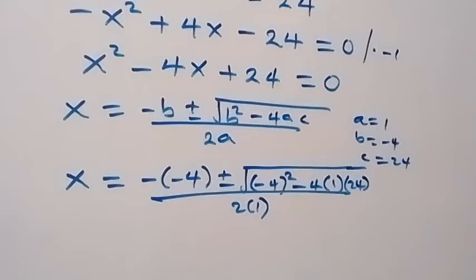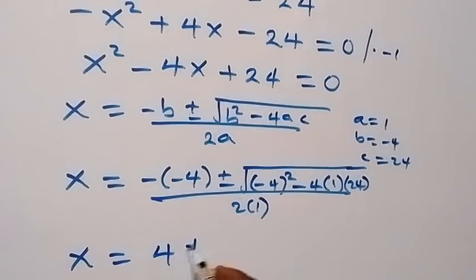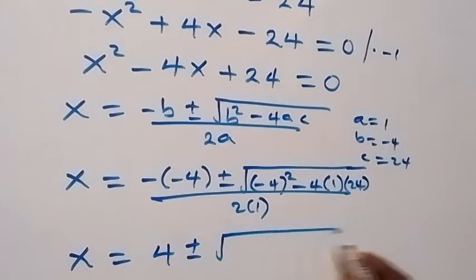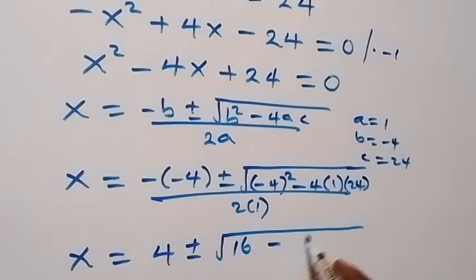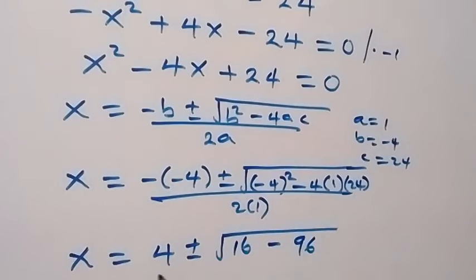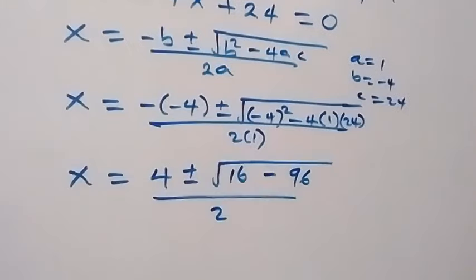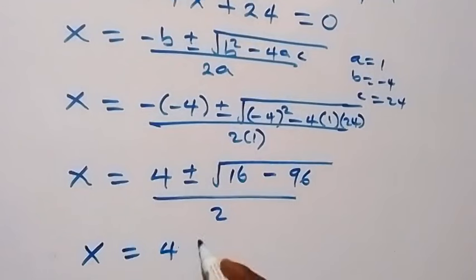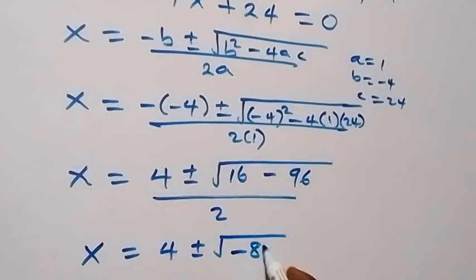From here, we have x equals to 4 plus or minus square root of 16 minus 4 times 24, over 2. This gives us x equals to 4 plus or minus square root of minus 80, over 2.